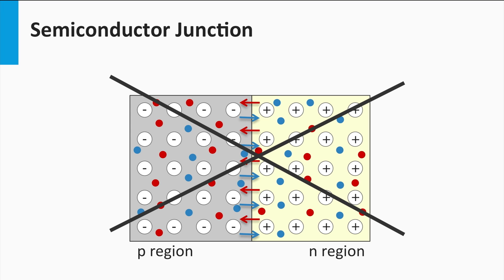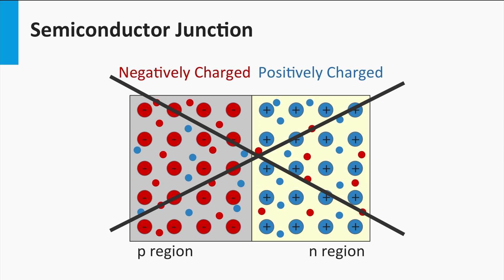Let's consider the homogeneously distributed charge carriers as shown here. Are the p-region and the n-region neutrally charged? The answer is no. The p-region is negatively charged. Although there are just as many holes as electrons, there are still many fixed negatively charged acceptor atoms in the background. The n-region is heavily positively charged — although there are just as many holes as electrons, there are still many fixed positively charged donor atoms in the background. So this charge will create a strong electric field from the n-region to the p-region.